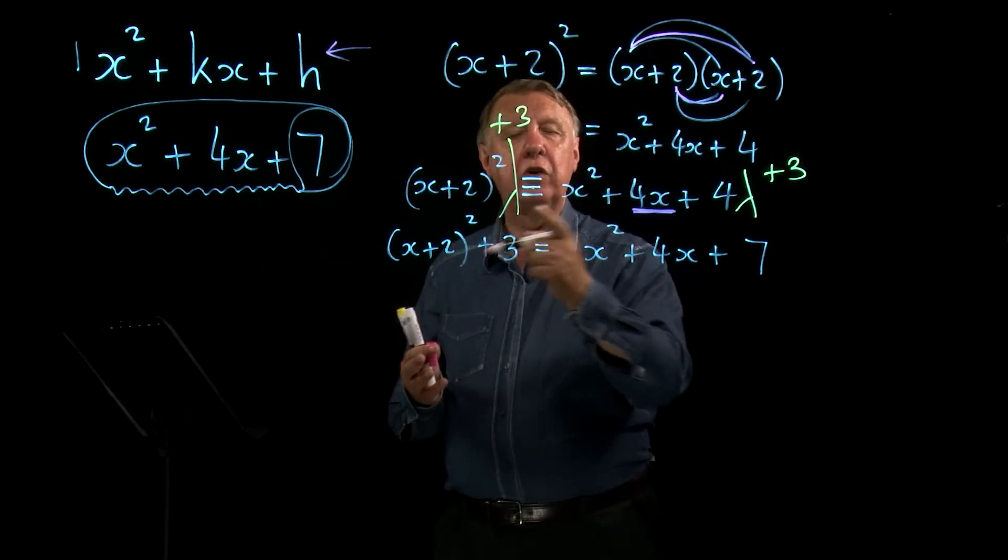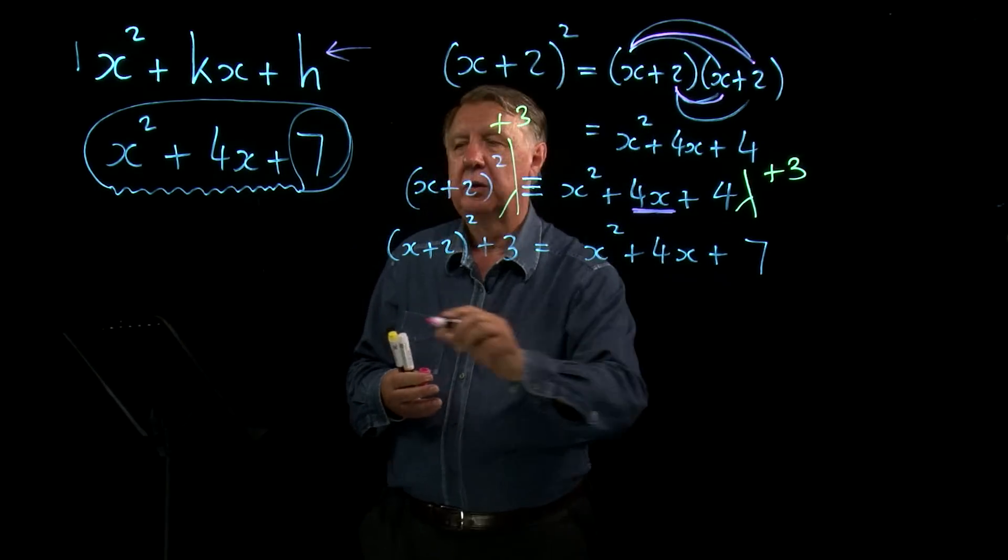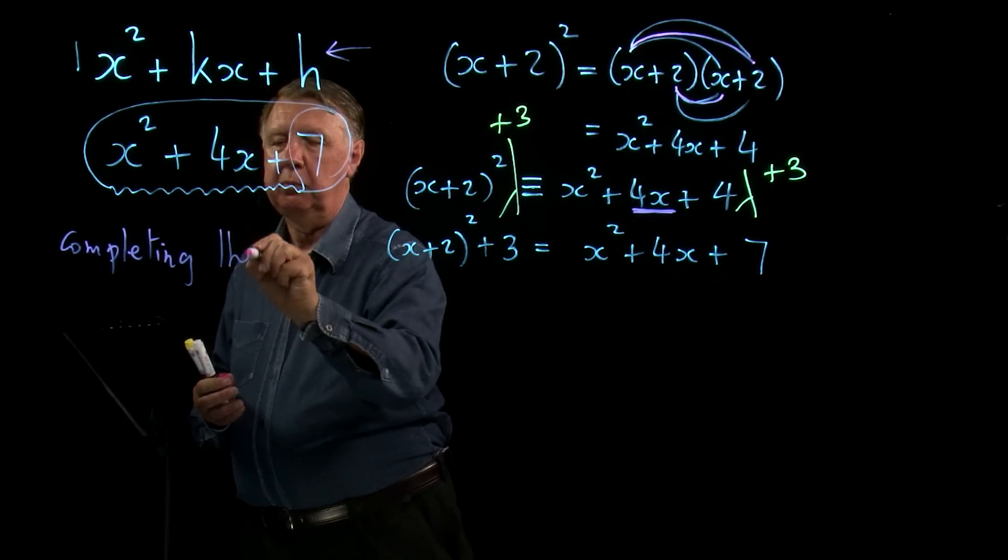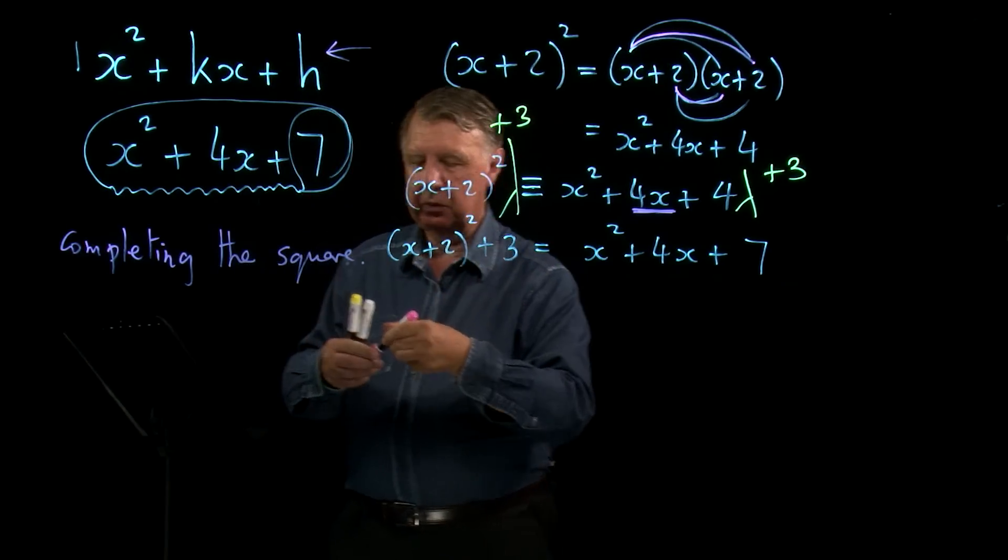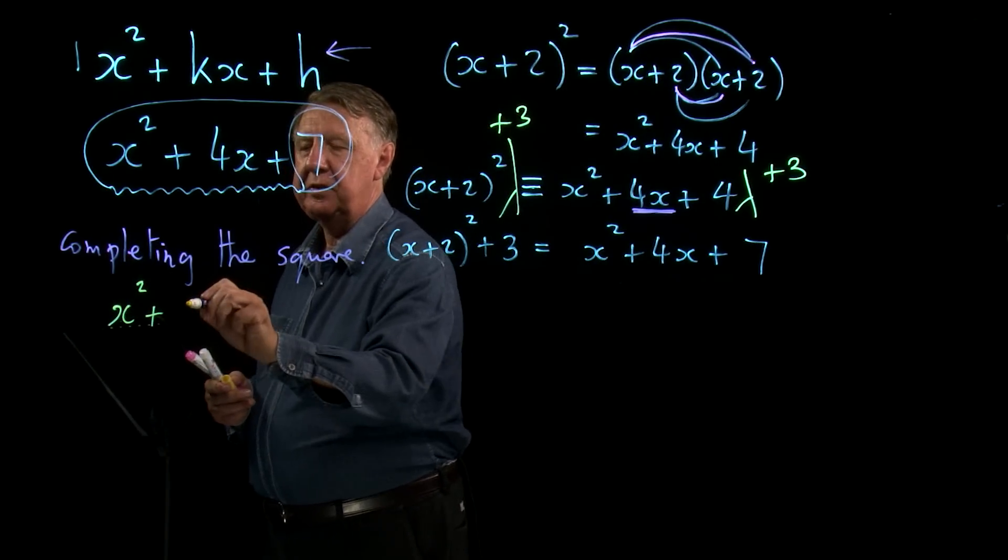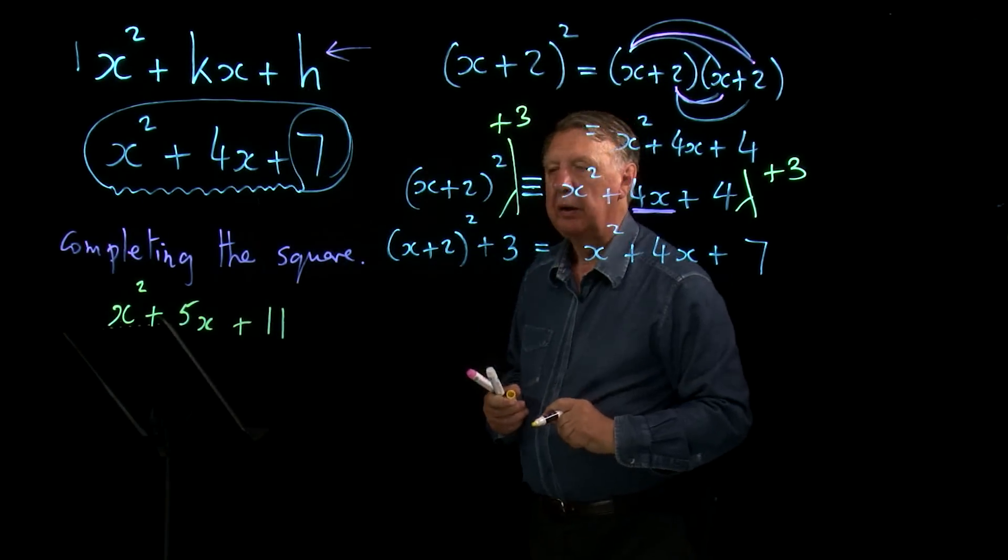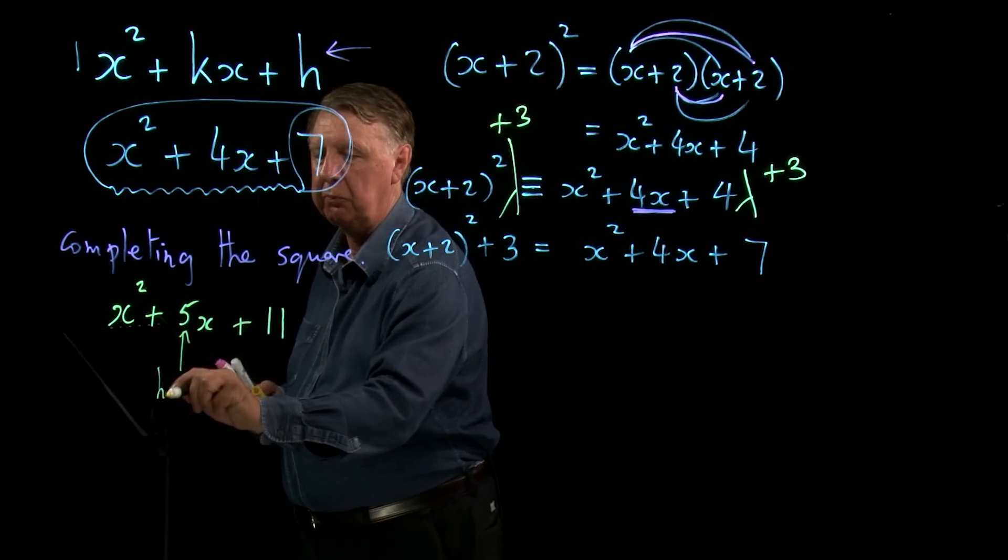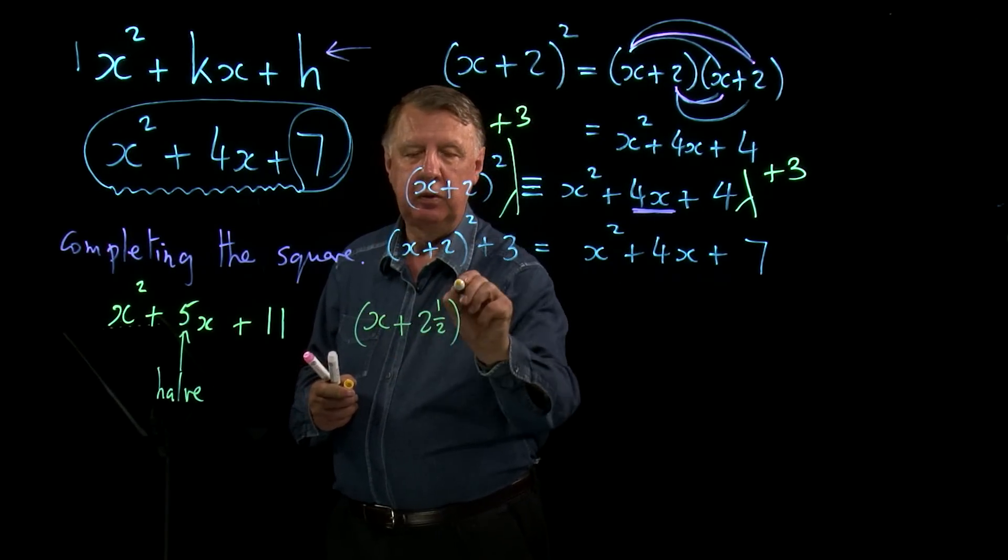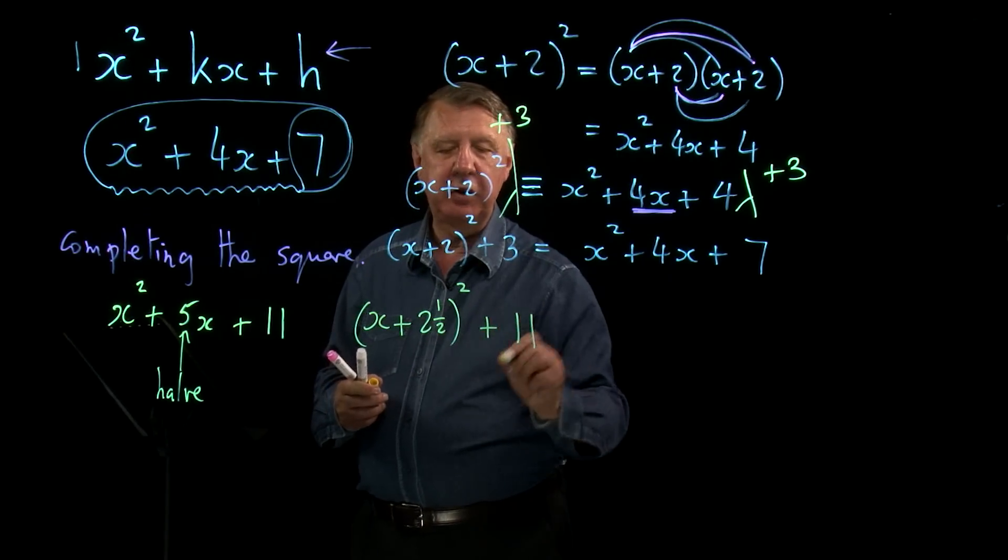So once you learn what's going on here, it's a pretty simple trick to actually be able to do this process called completing the square. So let's work the process through then with another example. Let's have x squared plus, let's put an odd number in here. Why not, plus 11. So what do we do first? We halve that number. x plus 2 and a half squared.